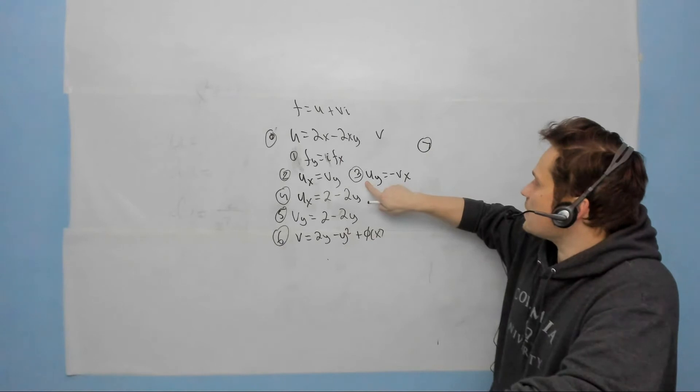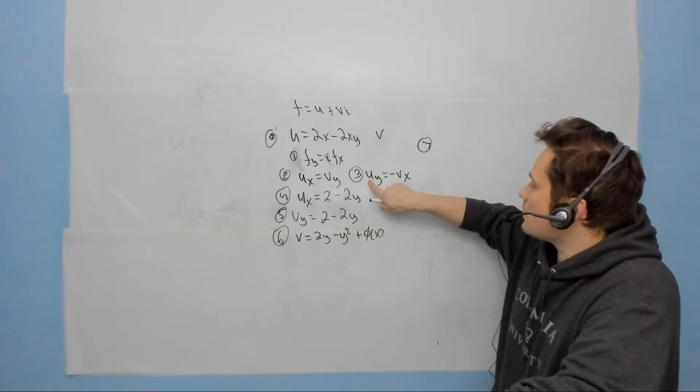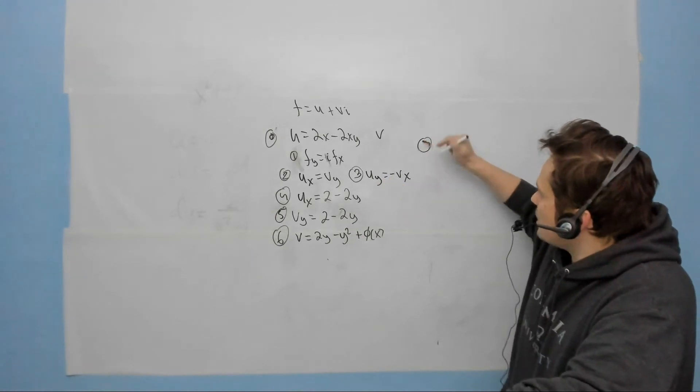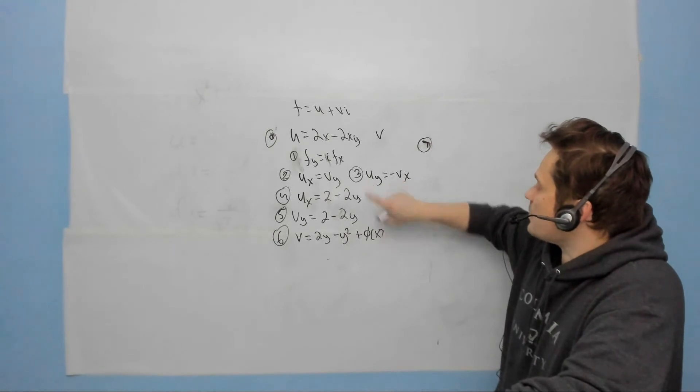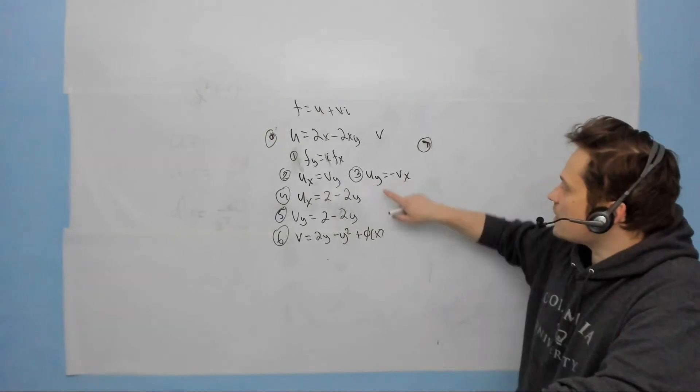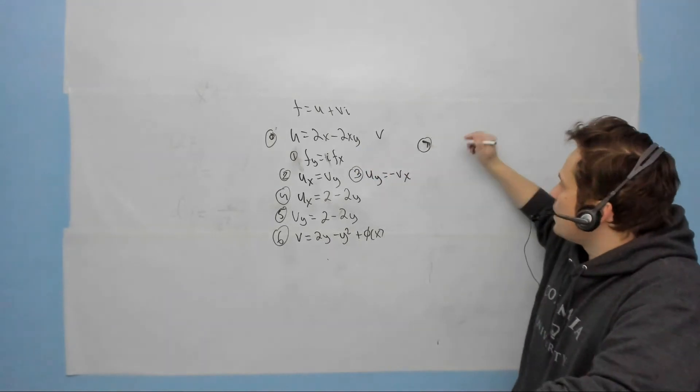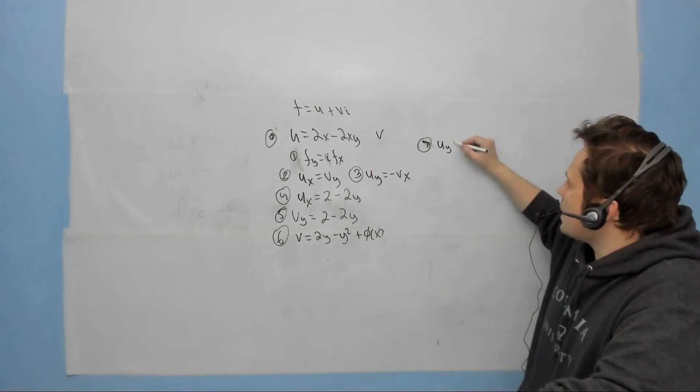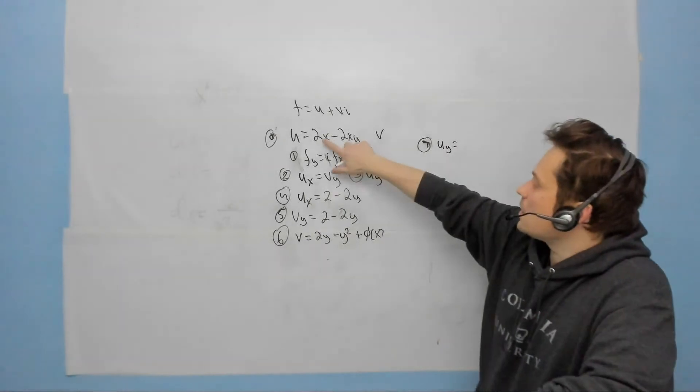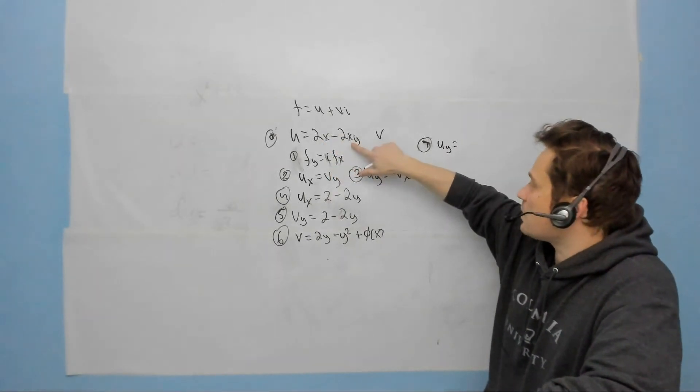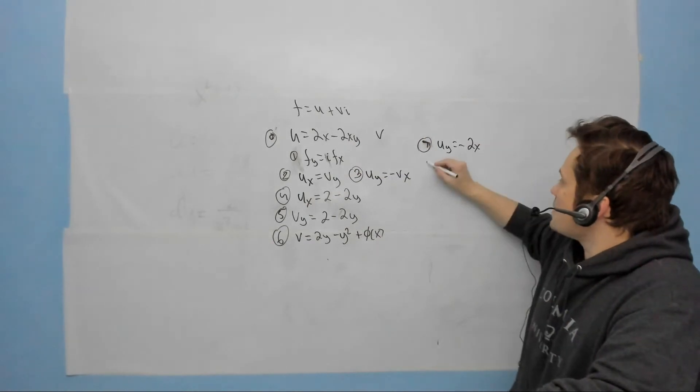I'm going to go on to step 7. Step 7 says look back at step 3. u sub y equals negative v sub x. So at step 7, I'm going to make use of step 3. I can find the left side of step 3, u sub y, from the original. So I'm going to have that u sub y is equal to, well, differentiating 2x makes it go away, differentiating negative 2xy makes it negative 2x.